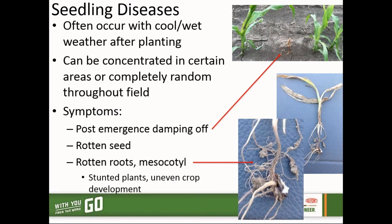Whenever we get a lot of rain after planting — either before emergence or even after emergence — that can lead to heavier seedling disease pressure. Often that's going to occur in cool, wet conditions after planting; however, even in warmer and wet conditions it also can happen. Many times these symptoms will be concentrated in our wetter, lower areas of the fields, but sometimes they can be randomly scattered across the field as well.